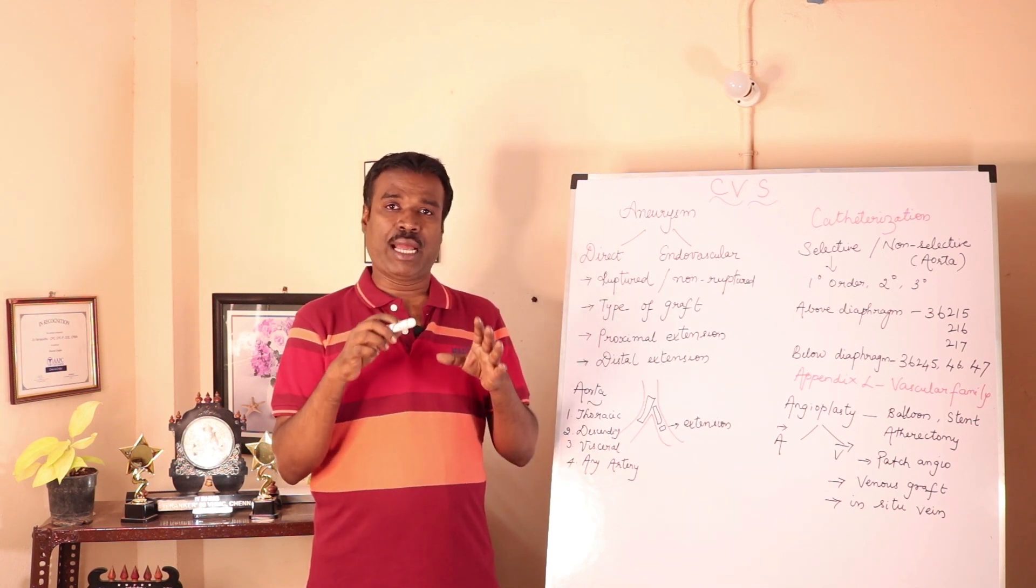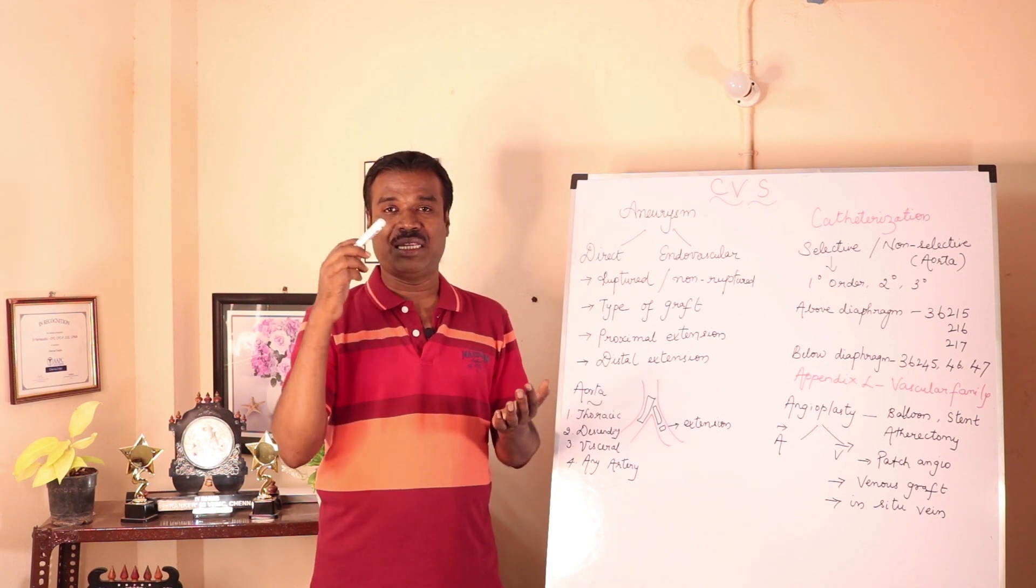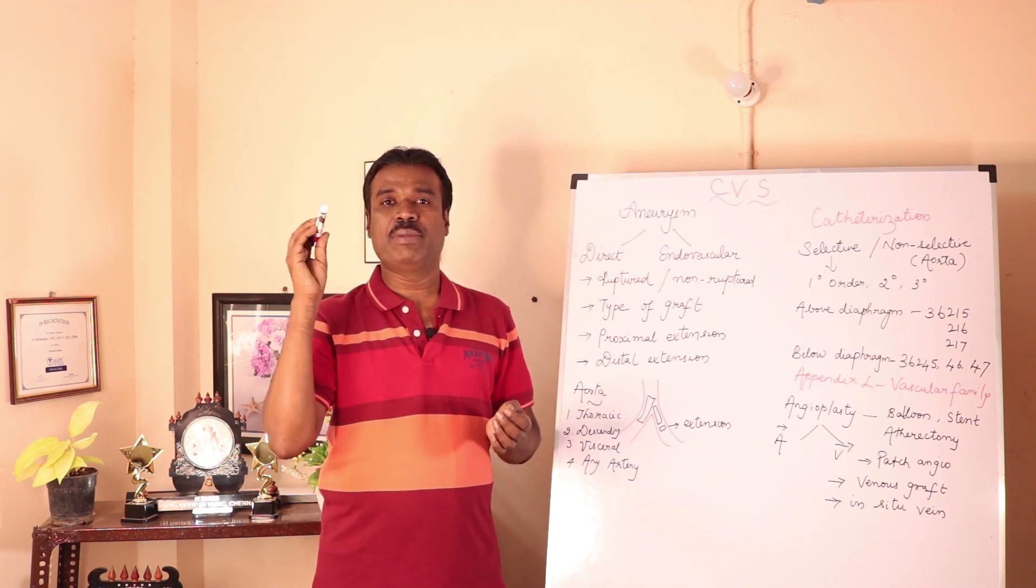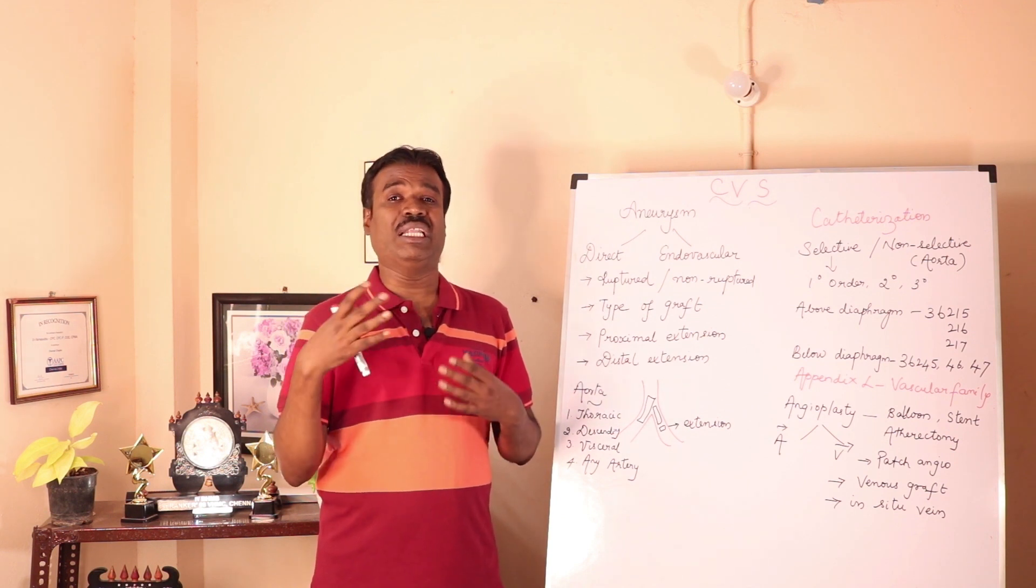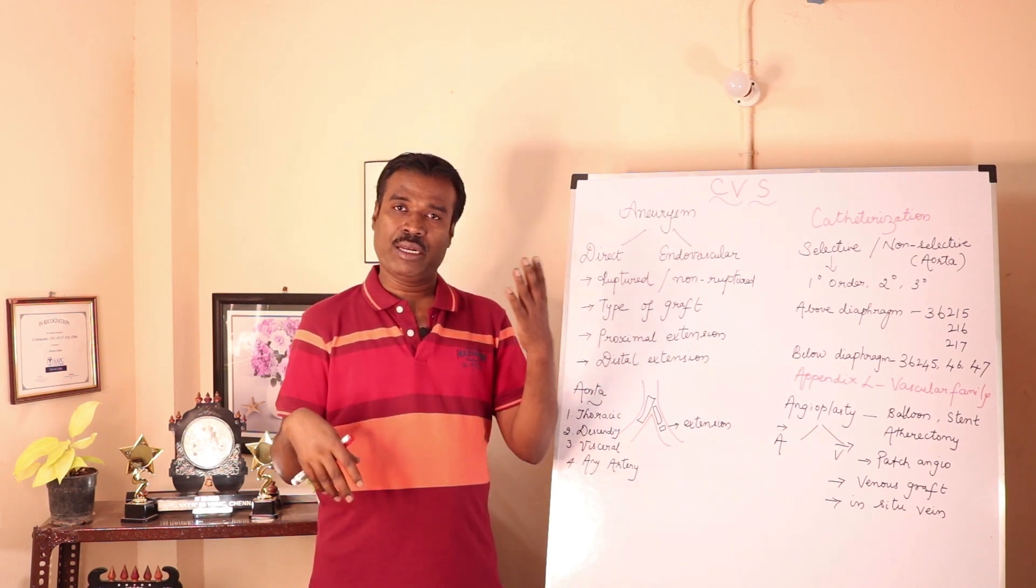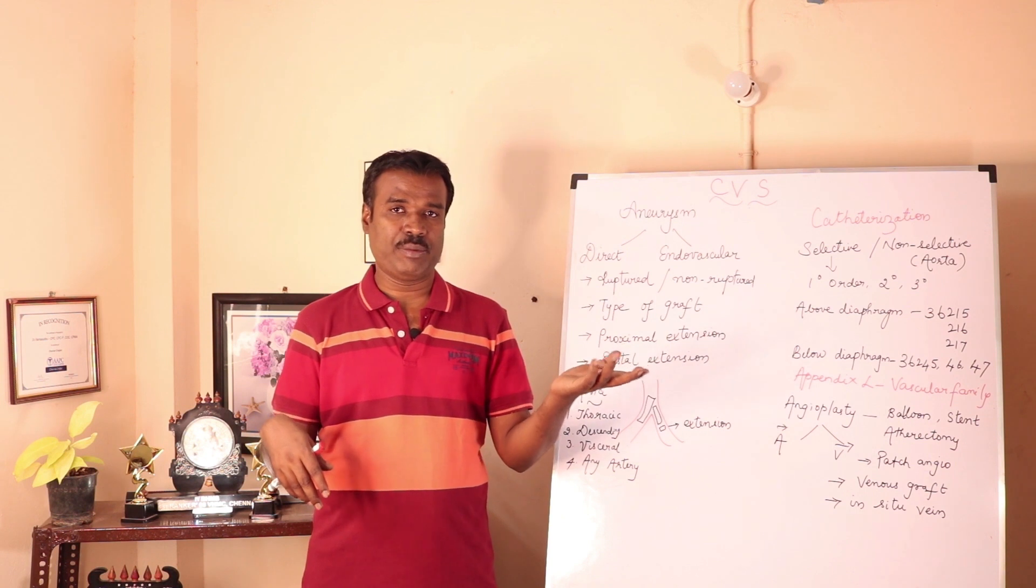And just mere angioplasty or stent will not work out, then at that time the surgeon will be removing the atheromas. The process is called atherectomy. Now when physicians are doing atherectomy, you can report the atherectomy procedure code.